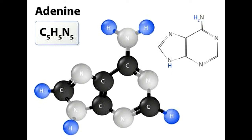The pentose sugar is ribose in the case of RNA, and it is deoxygenated ribose or deoxyribose in DNA. In DNA, adenine binds to thymine, whereas it binds to uracil in RNA. The nucleoside form of this molecule interacts with a variety of other biomolecules for the proper functioning of cellular processes.